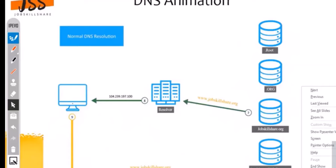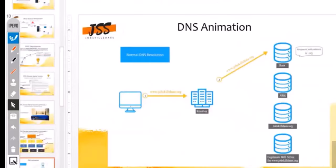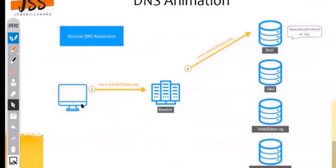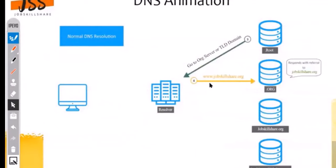At this stage the host machine has resolved the IP address correlated with jobskillshare. The next time, it will go directly to that IP.